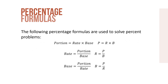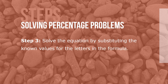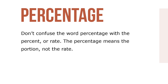The following percentage formulas are used to solve percent problems: Portion equals rate times base, or P = R × B. Rate equals portion over base, or R = P ÷ B. And base equals portion over rate, or B = P ÷ R. Here are the steps to solving percentage problems. Step 1: Identify the two knowns and the unknown. Step 2: Choose the formula that solves for the unknown. Step 3: Solve the equation by substituting the known values for the letters in the formula. By remembering one basic formula, P = R × B, you can derive the other two using your knowledge of solving equations. Don't confuse the word 'percentage' with 'percent' or rate — percentage means the portion, not the rate.